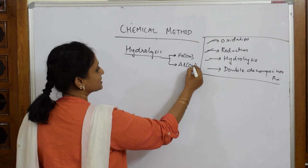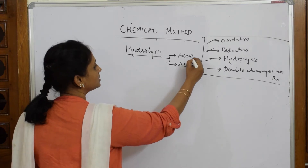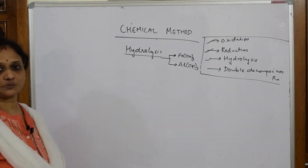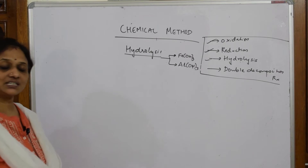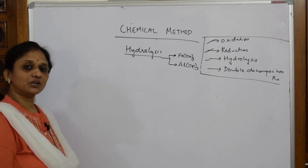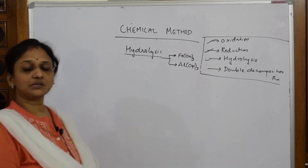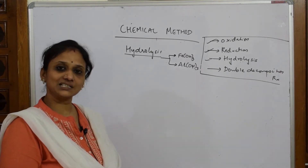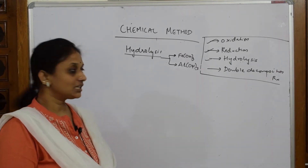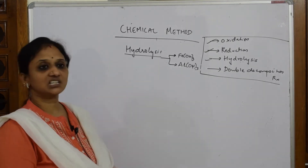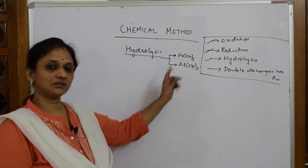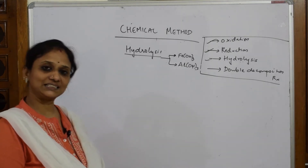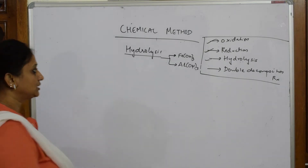These salts can be prepared by the hydrolysis process. Earlier we said we can prepare gold salt, platinum salt, or silver salt using the reduction process. Here, hydrolysis can be used to prepare ferric hydroxide and aluminium hydroxide. Let us see the reactions.